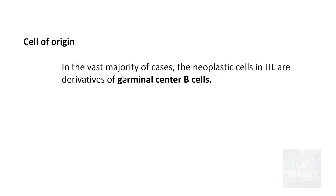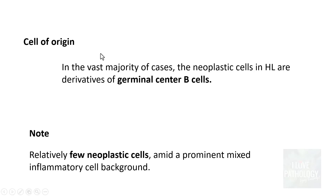Now, what is the cell of origin of Reed-Sternberg cells? In the vast majority of cases, the neoplastic cells in Hodgkin Lymphoma are derivatives of germinal center B cells — it is these B cells in the germinal center which transform into Reed-Sternberg cells. Importantly, there are very few neoplastic cells; what you see is that these neoplastic cells are seen amidst a prominent mixed inflammatory cell background within the lymph node.